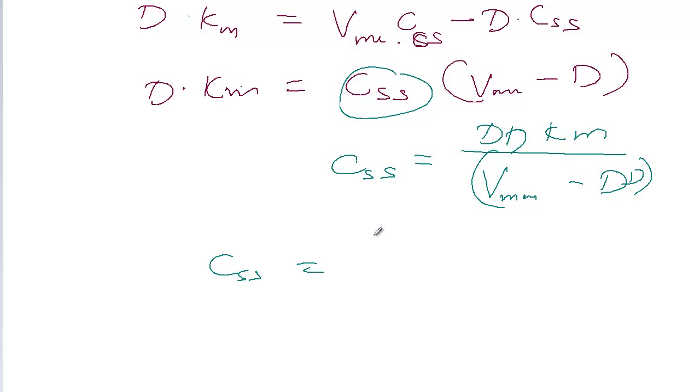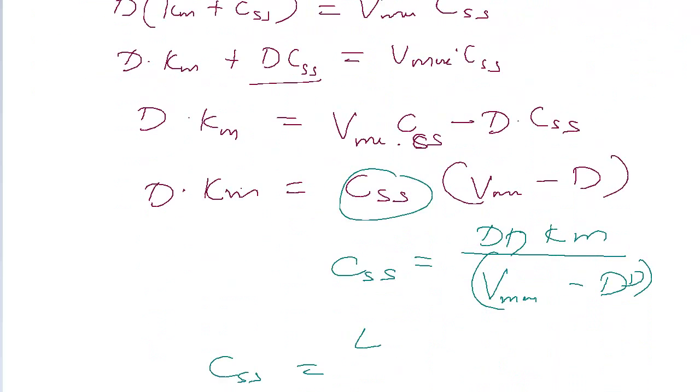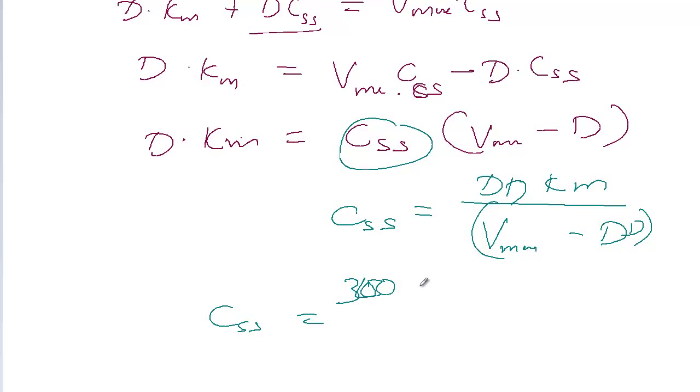So CSS, the daily dose is 300 mg per day, times Km is 4 mg per liter.